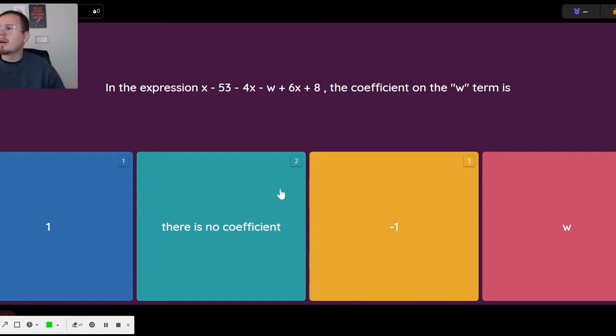This first problem is asking you what the coefficient on the W term is, so first let's find the W term. Where's W? There's W. Oh, click on the drawing tool - using Nimbus today to record this instead of my usual setup. My pen tool is not working.